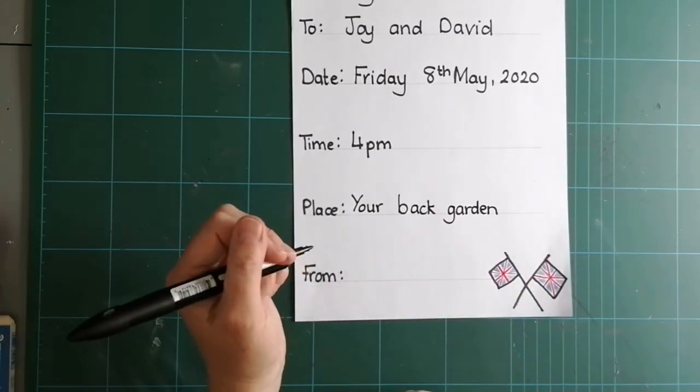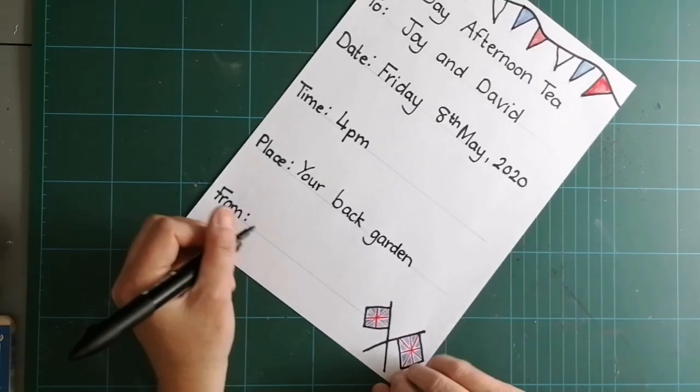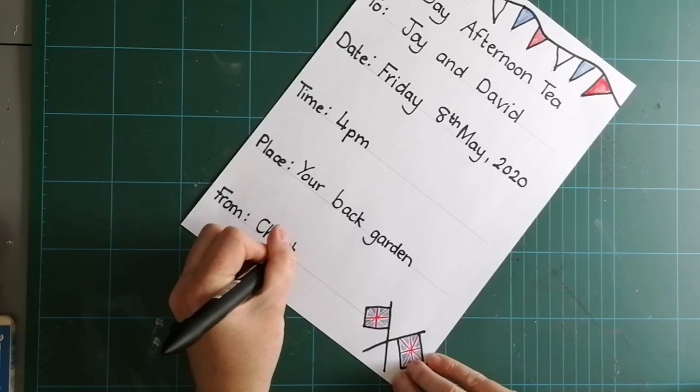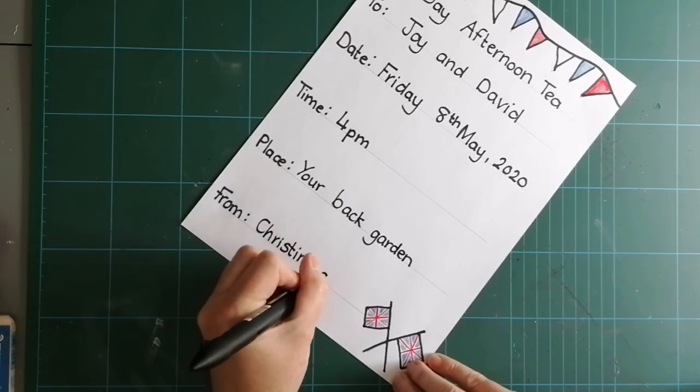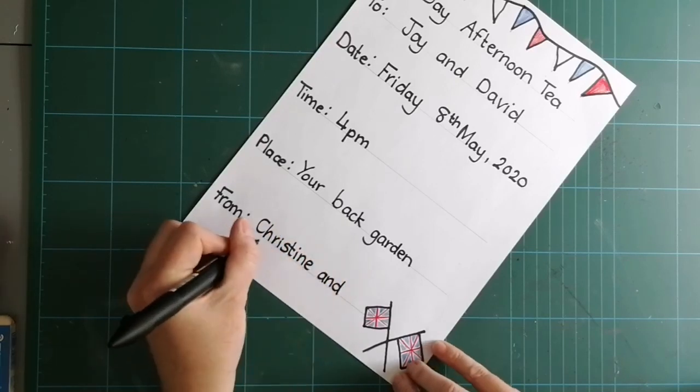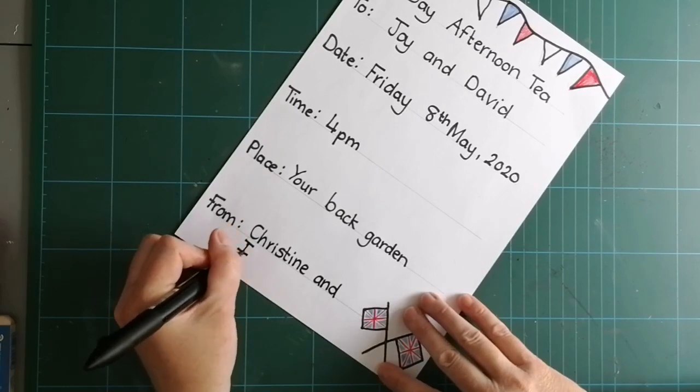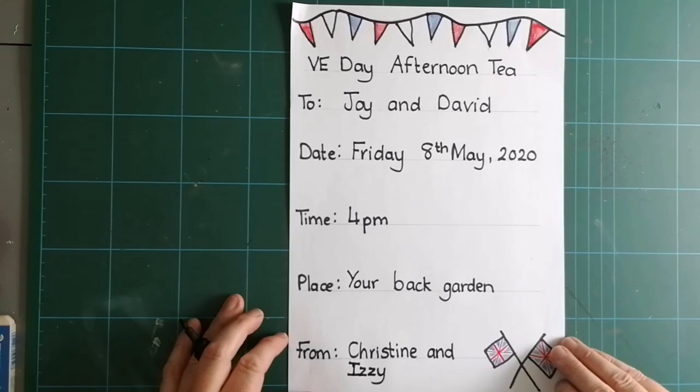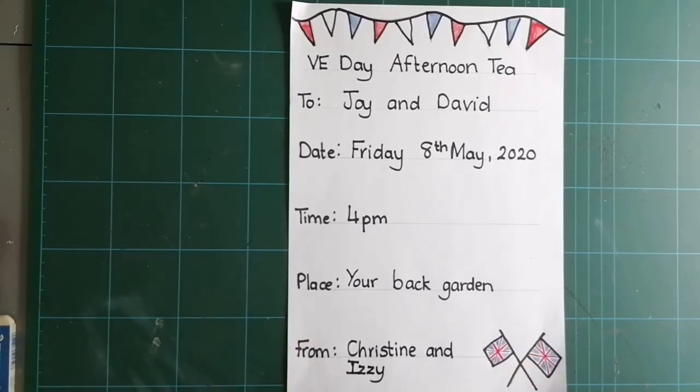Now then, I'm going to sign it off, my mammy. And my mammy's name is Christine. So, I'm going to put from Christine. And, Izzy. Now, Izzy is her little dog, who likes to be involved in absolutely everything. So, we're going to have to make sure that there's ham in some of those sandwiches, because Izzy loves ham. So, there is my invitation.